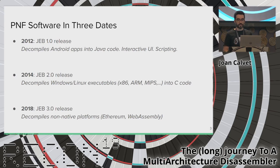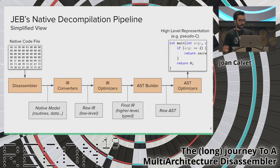In 2019, version 3 of JEB came out with decompilation for non-native platforms such as Ethereum contracts and WebAssembly modules. JEB started as an Android decompiler but nowadays we are extending it to make it a more general reverse engineering tool.